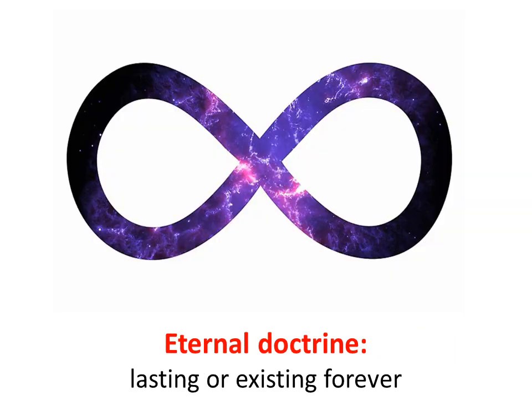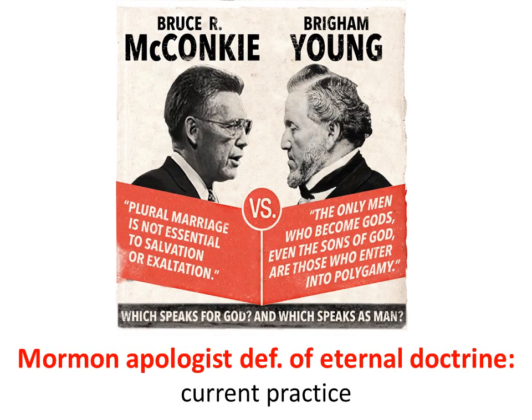Eternal doctrine — lasting or existing forever. But since the church has had a lot of doctrine that has changed, Mormon apologists have redefined 'eternal doctrine' to mean current practice or following the current prophet. Bruce R. McConkie said plural marriage is not essential to salvation or exaltation. But Brigham Young said the only men who become gods are those who enter into polygamy, and it is essential. So which one speaks for God? Just follow the current practice and the current prophet and you'll be fine.